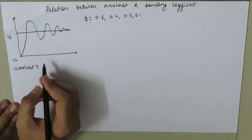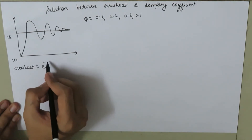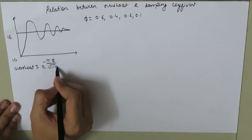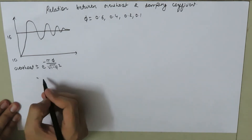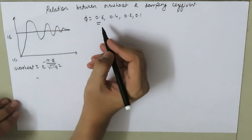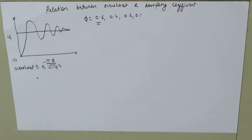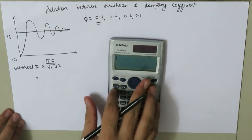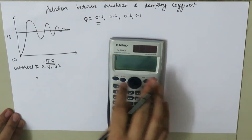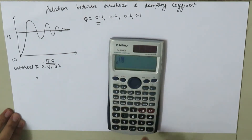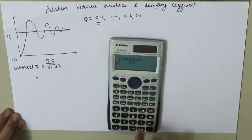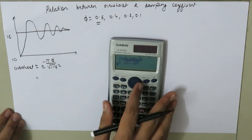We know that overshoot is equal to e to the power of negative pi times phi, divided by the square root of 1 minus phi squared. When phi is 0.6, let us calculate the overshoot.